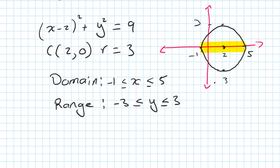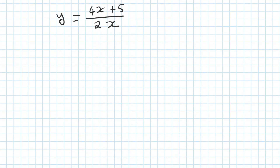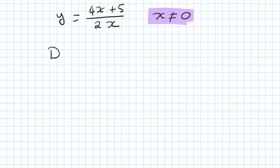Let's say y is equal to 4x plus 5 over 2x. To find the domain and range, you can see clearly that the denominator cannot equal 0. So x cannot equal 0, because 2 times 0 is 0 and you cannot divide by 0. So the domain is all real x, except x equal to 0.